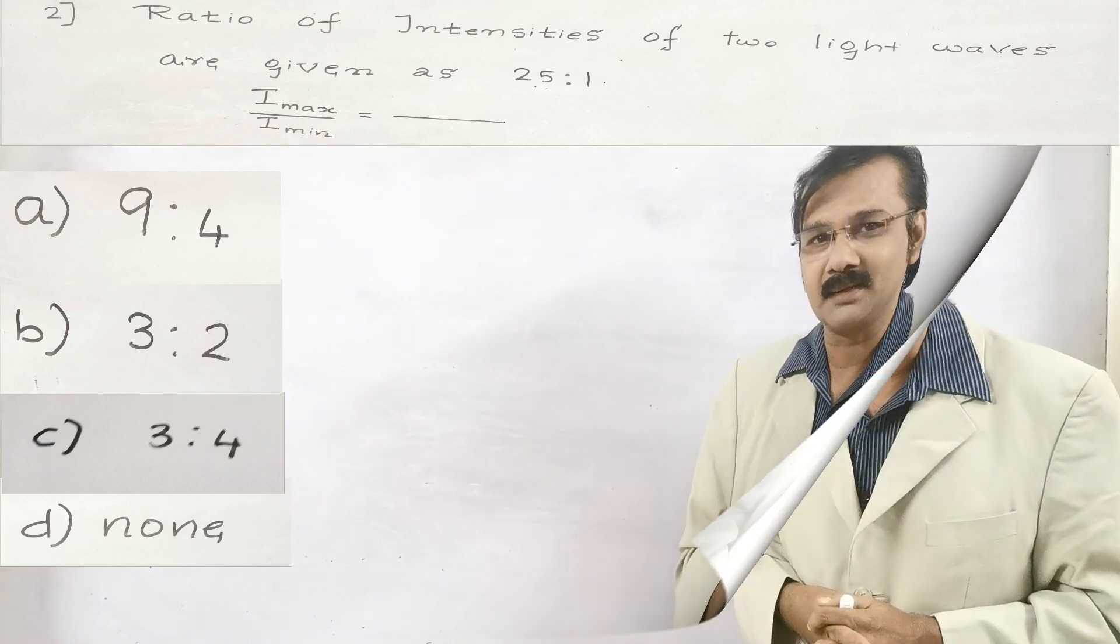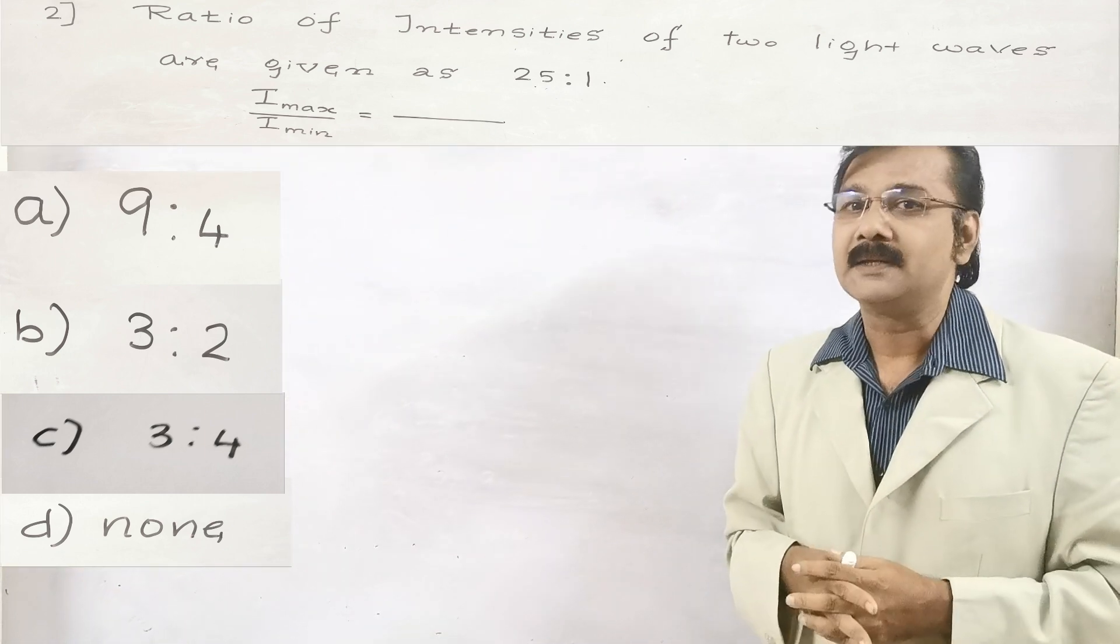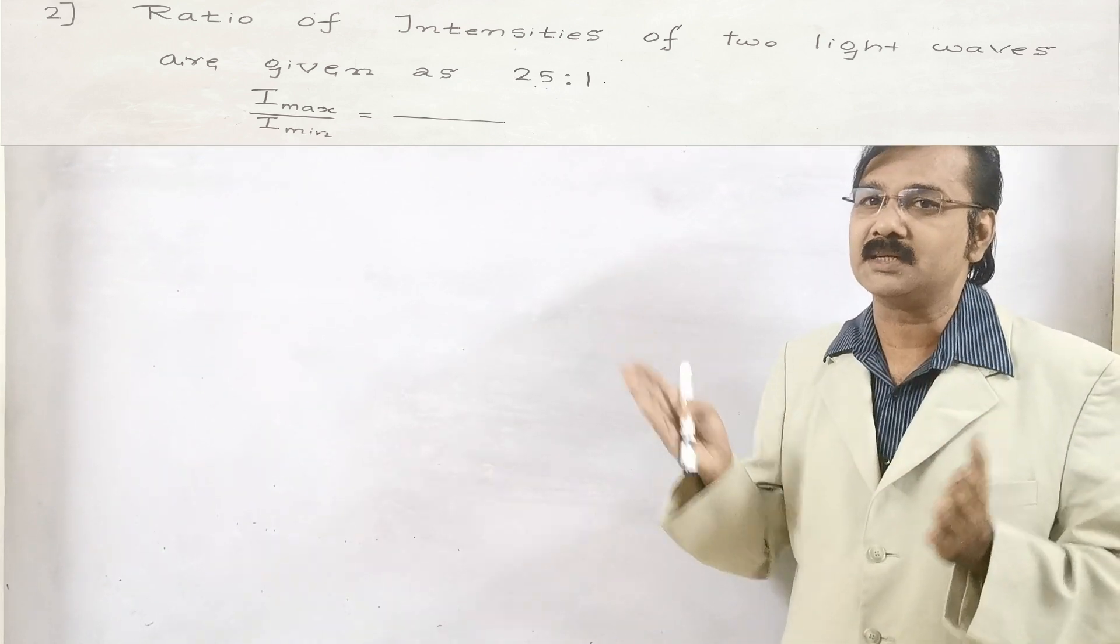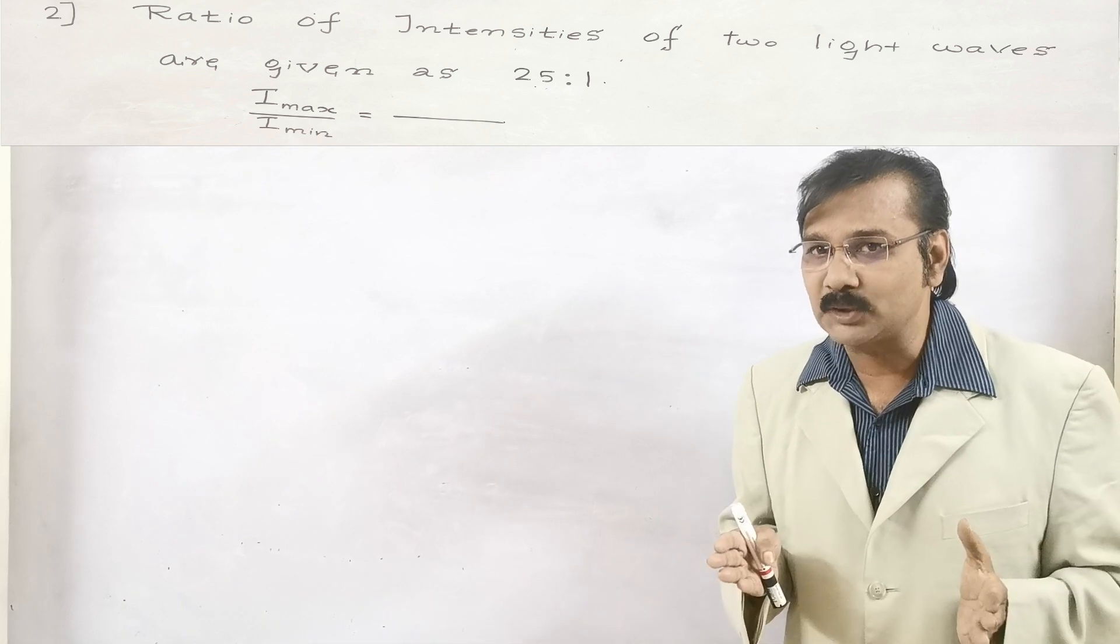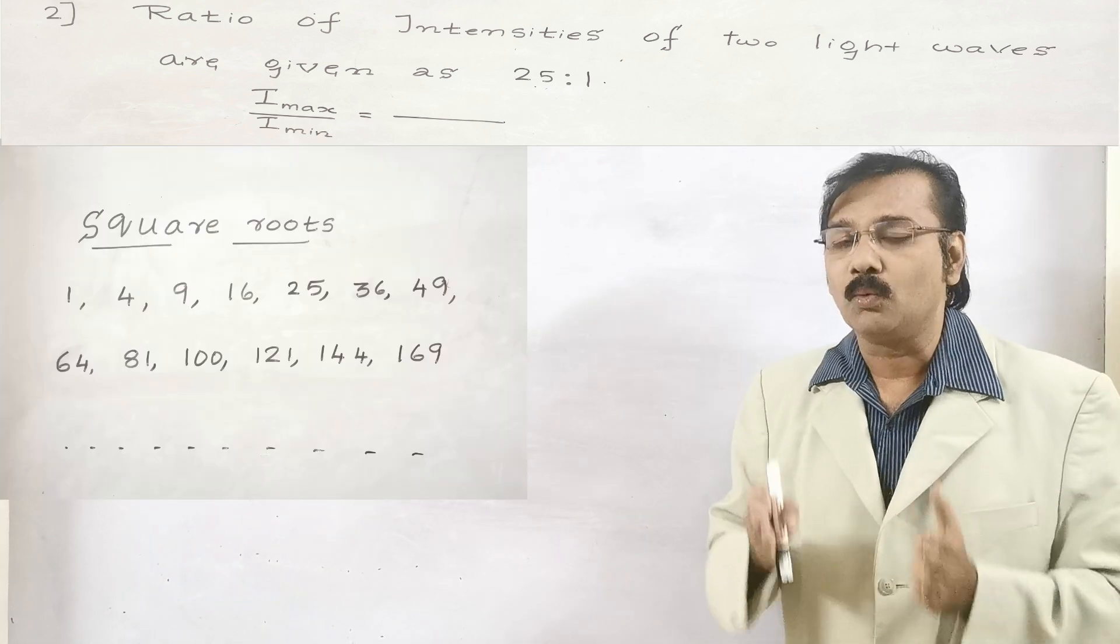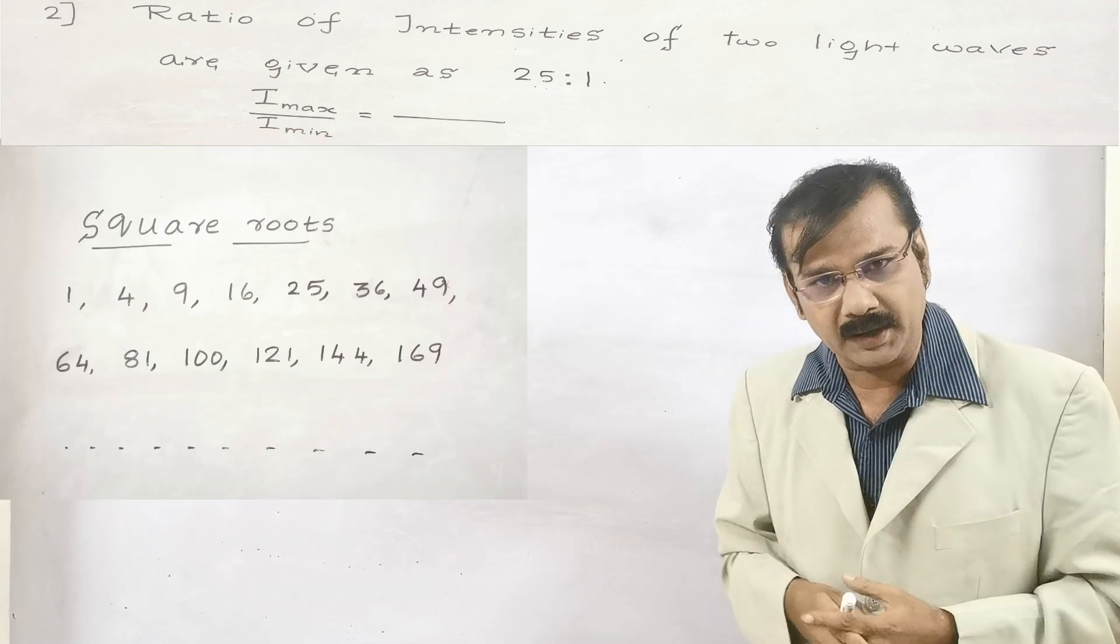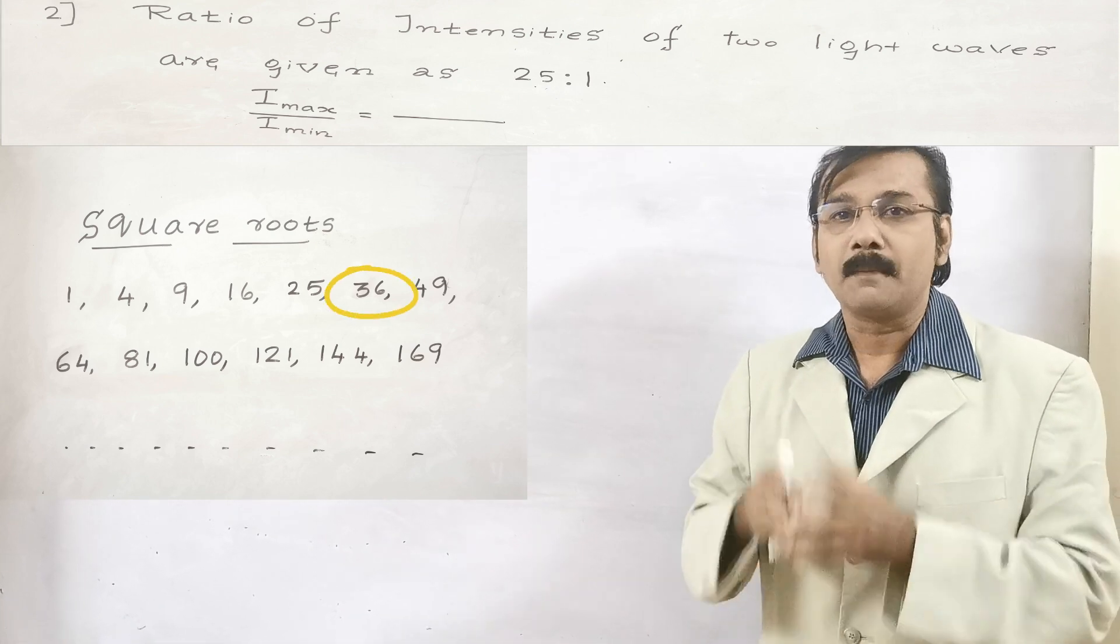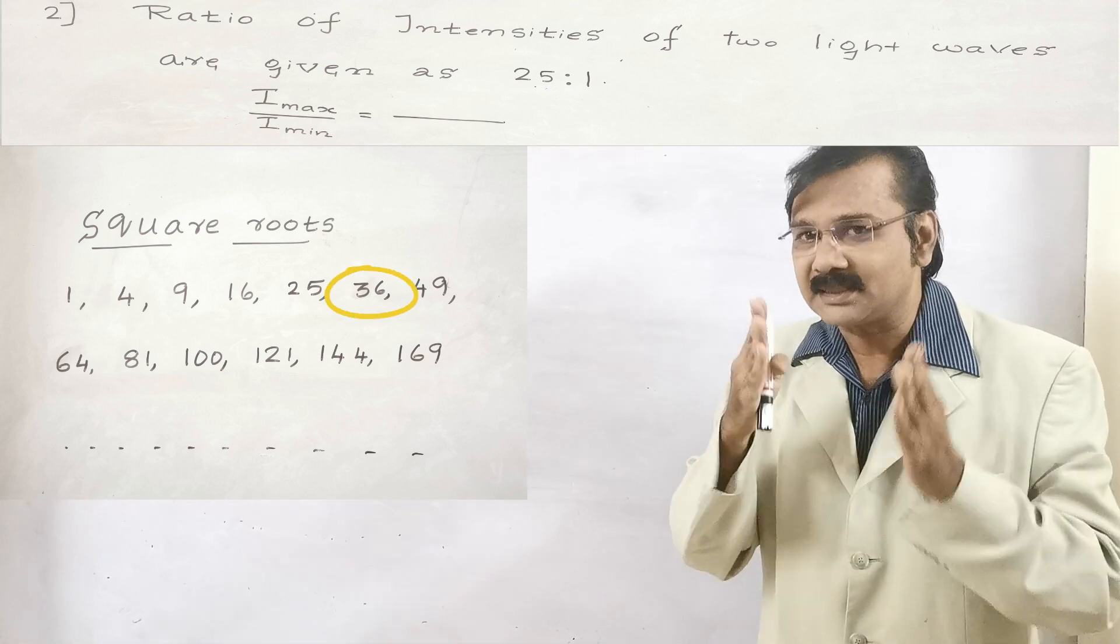I know that you got the answer. So now let us go for the solution with a small hint. What is the hint given? I have already given the hint. It is we have to go with square roots. So now you tell me what is the square root after 25? Yes, it is 36. Then what is the square root before 25? It is 16.